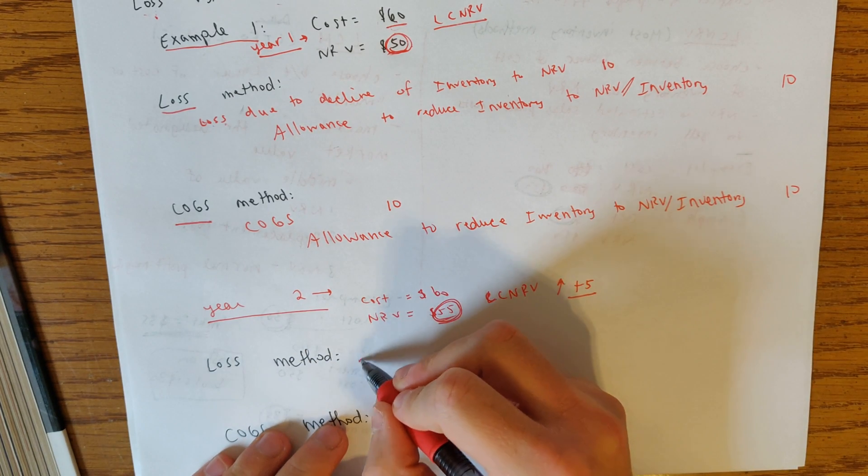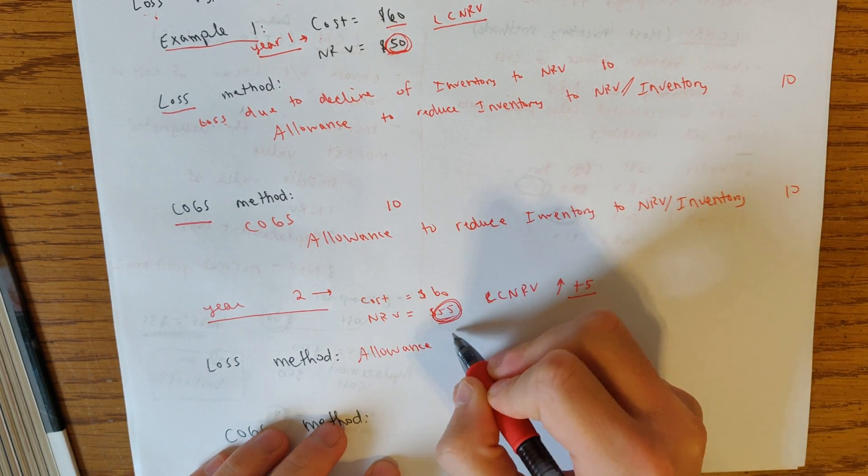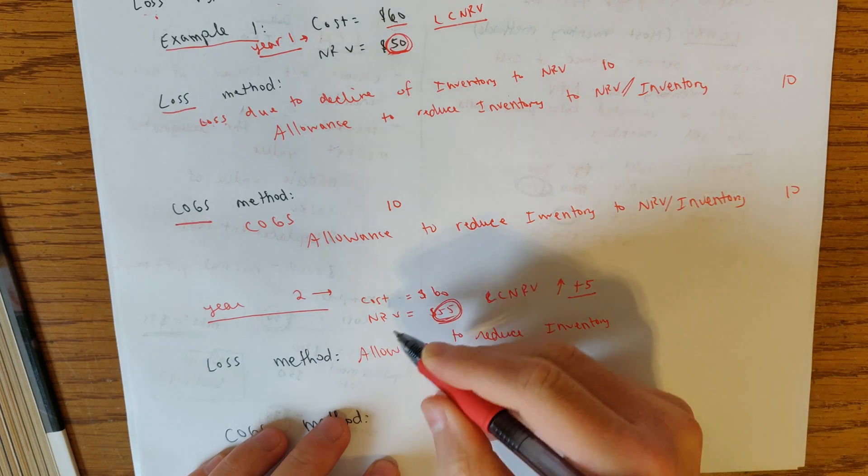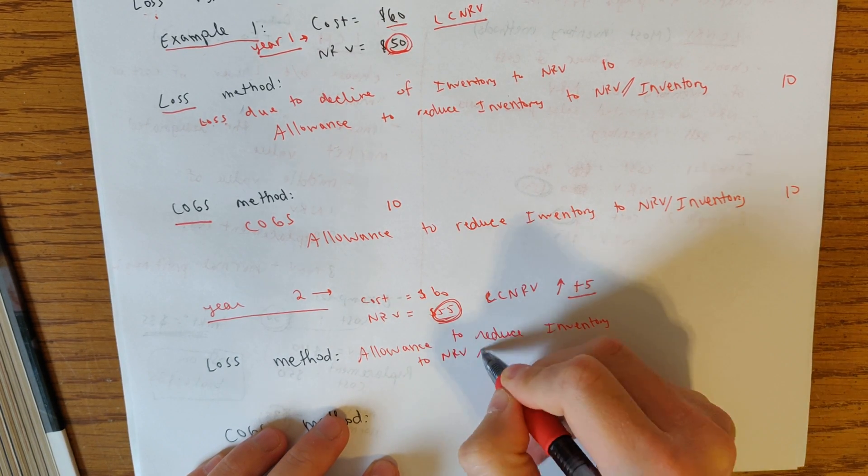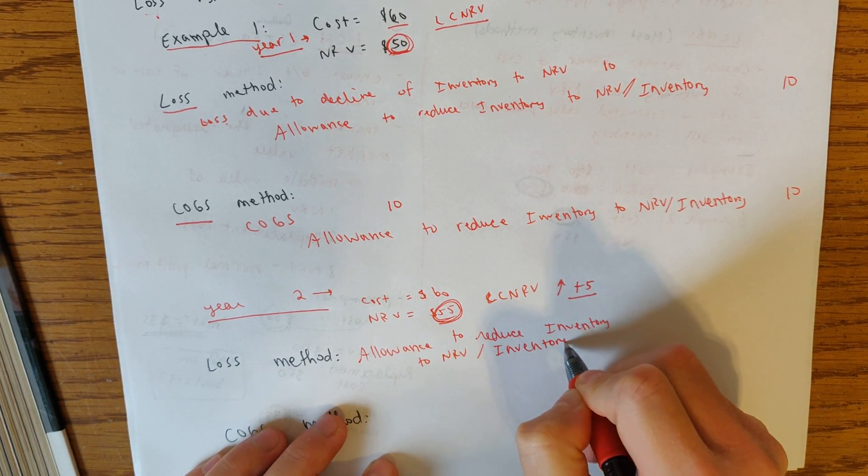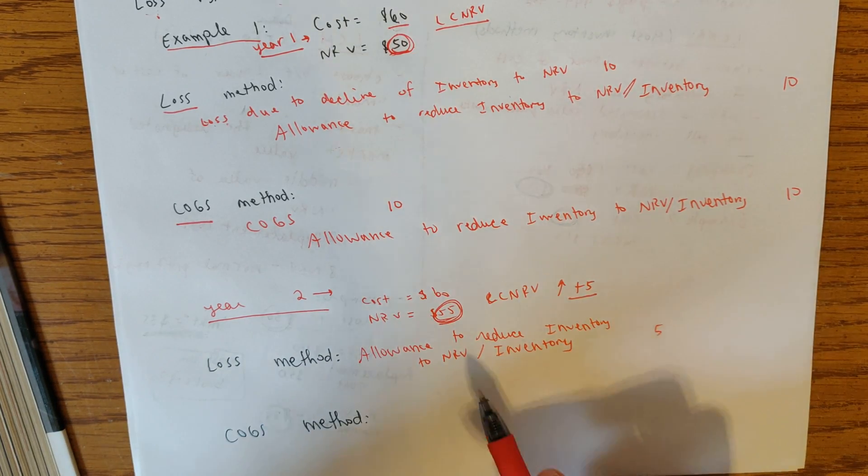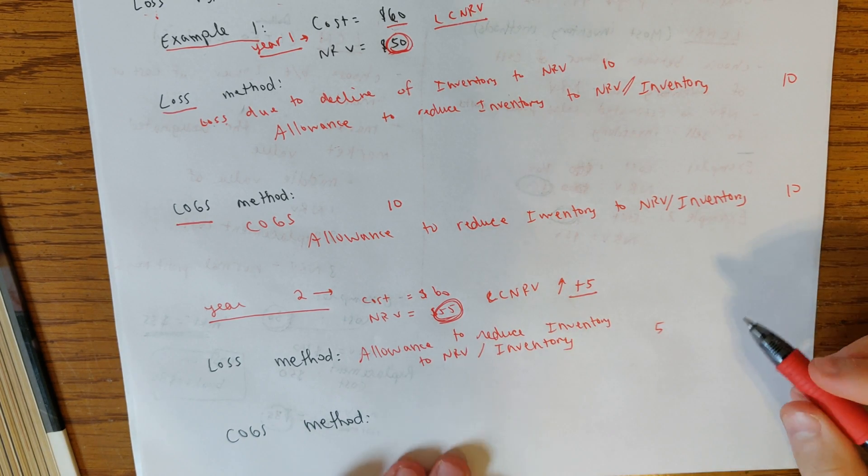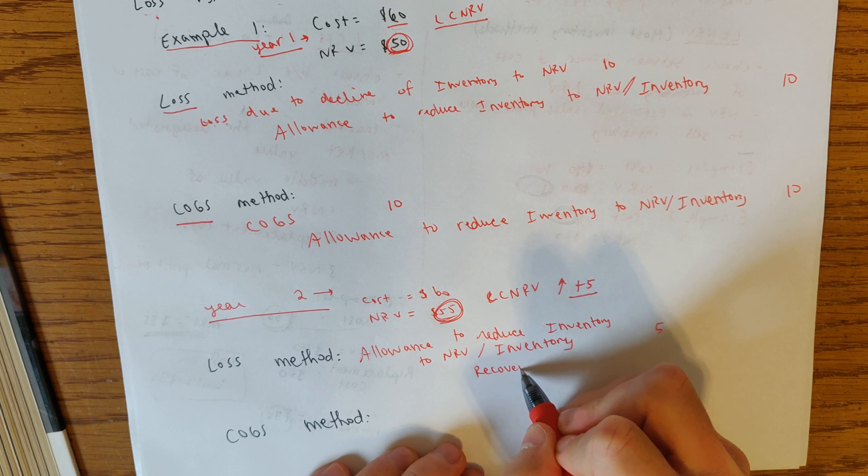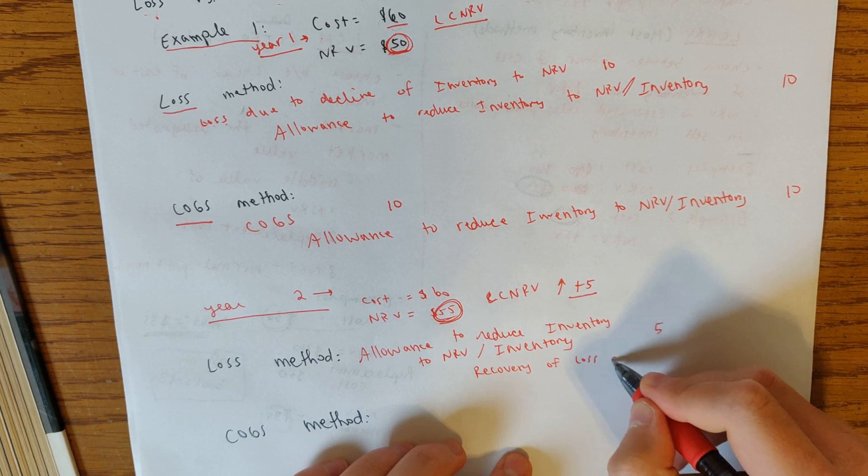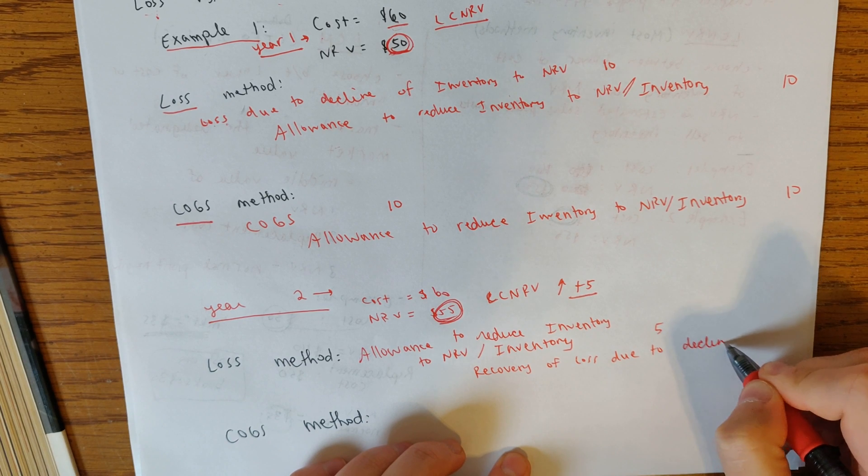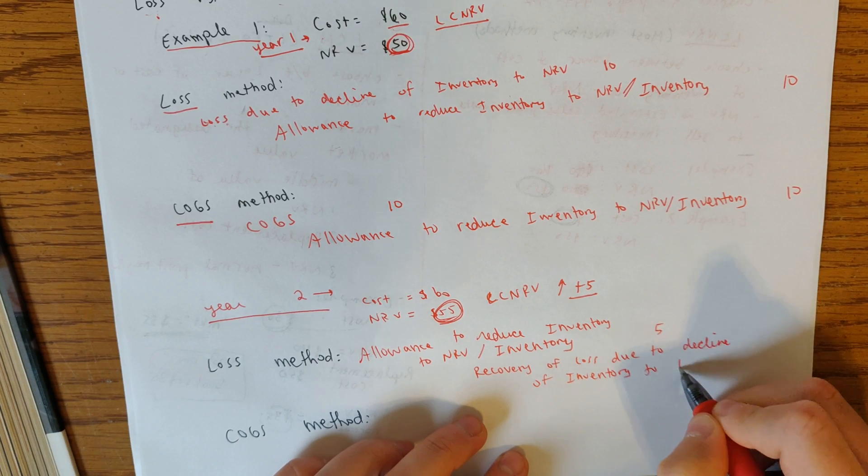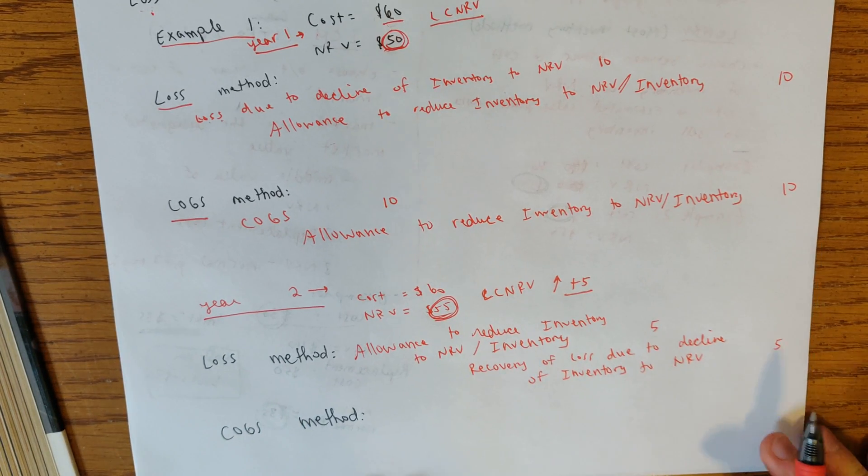So now our journal entry is going to look a little bit different. Now, again, we have loss method. And so what happens here is that, again, it would have to specify, but it needs to tell you either use the allowance method or just write it directly to inventory. But either way, our debit is to allowance to reduce inventory to net realizable value or inventory. That would be our debit. And our credit would be recovery of loss due to decline of inventory to NRV.